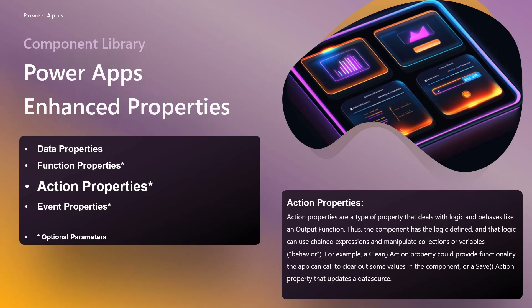Next up is action properties. These work almost identically to the output function property, with the exception that you can actually chain expressions, manipulate collections or variables, and you have access to behavioral experiences. So you can actually invoke the clickable event of something within the component. For example, if you have a button in a component and you create an action property that connects to that button somewhere else in your app, you can invoke that on-select experience without needing to actually click the button inside the component. You define the logic in your component, then your app can invoke that logic via the action property. And again, it has optional parameters.